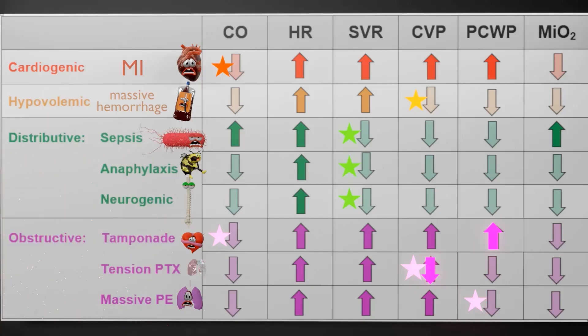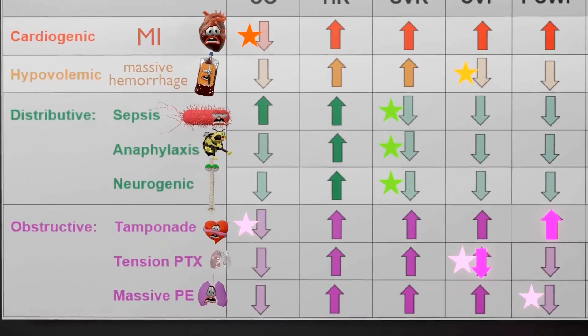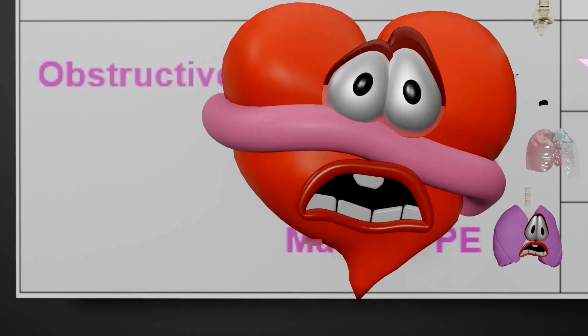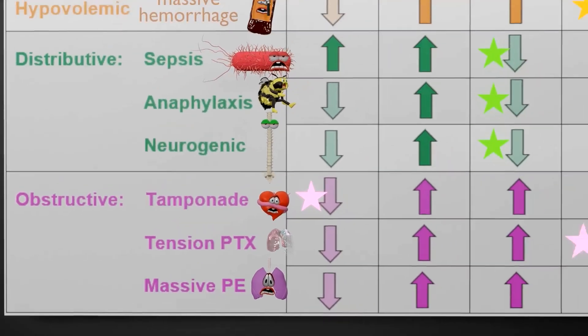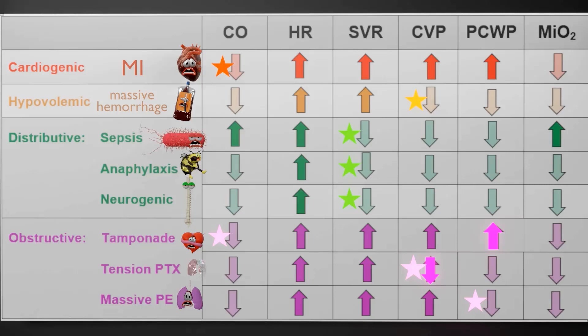Let's move on to obstructive shock. The basic idea is that there's an obstruction — something is squashing the heart, for example in cardiac tamponade, or in tension pneumothorax. In cardiac tamponade, since the heart is being squashed and strangled, cardiac output will be reduced. Therefore, there will be a compensatory increase in heart rate as well as systemic vascular resistance. There's also an obstruction in blood trying to get back to the heart from the lungs because everything is squashed, so PCWP will be increased. Notably, only in cardiac tamponade and cardiogenic shock will PCWP be elevated.